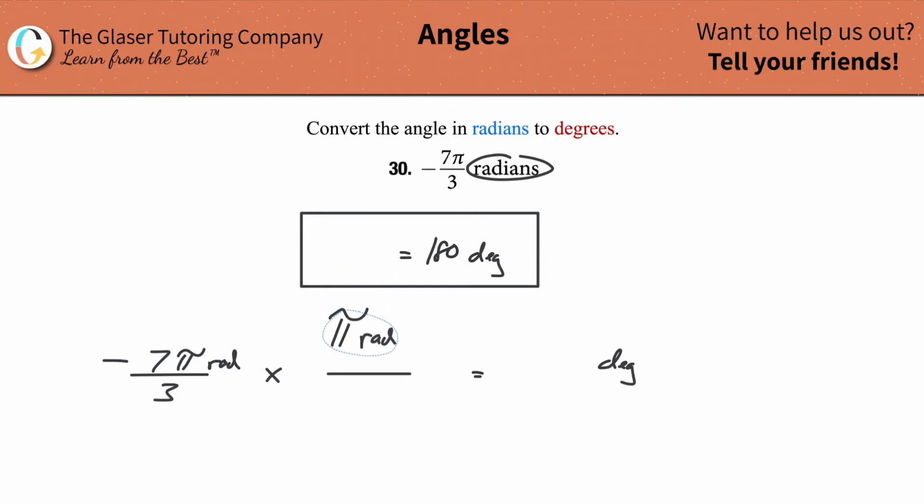You're going to take your radian measurement that you know, your known relationship, plug in the radians on the bottom. You're going to then take the degrees and plug them in on the top, and you're going to do it exactly this way, with degree on the top, radian on the bottom, because you want the radians to cancel. If you were doing the other conversion from degrees to radians, this would have just been flipped.